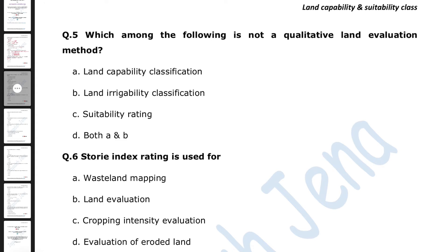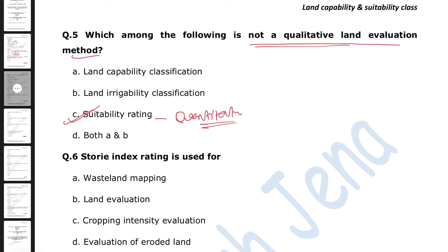Next question: which among the following is not a qualitative land evaluation method? Options are: land capability classification, land irrigability classification, suitability rating, or both A and B. The right answer is suitability rating — it is not a qualitative land evaluation method; it is quantitative. There are two types of land evaluation methods: qualitative and quantitative. Qualitative methods include land capability classification and land irrigability classification. Quantitative land evaluation methods include suitability rating.